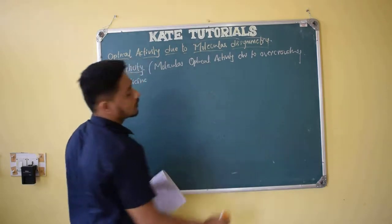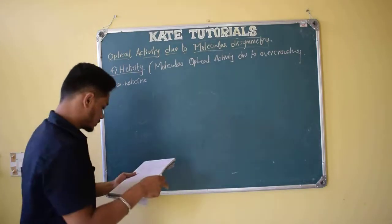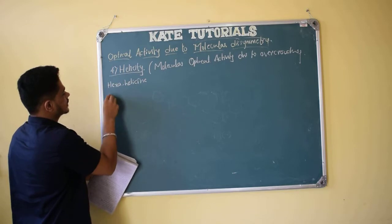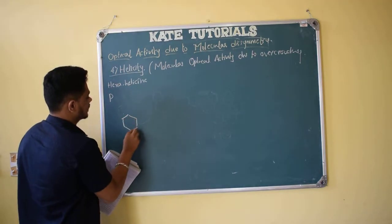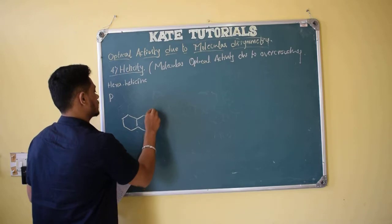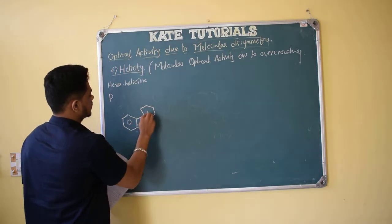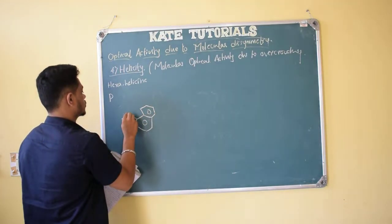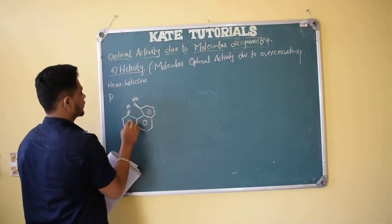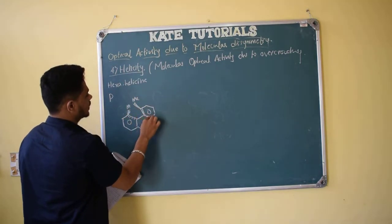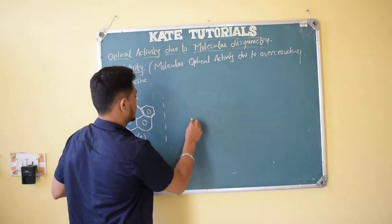The same example was given for substituted phenanthrene. In substituted phenanthrene, because of the methyl groups one methyl goes above and the other goes below due to repulsion. If the right-handed end goes above it is P plus, and its mirror image — where the left-handed end is below — is M minus.